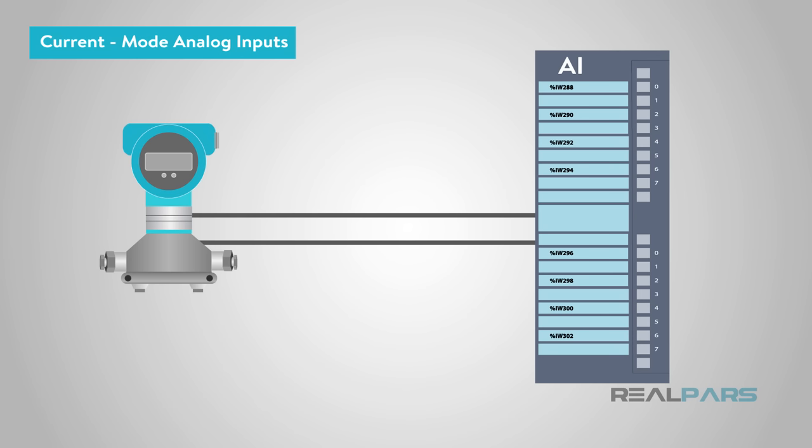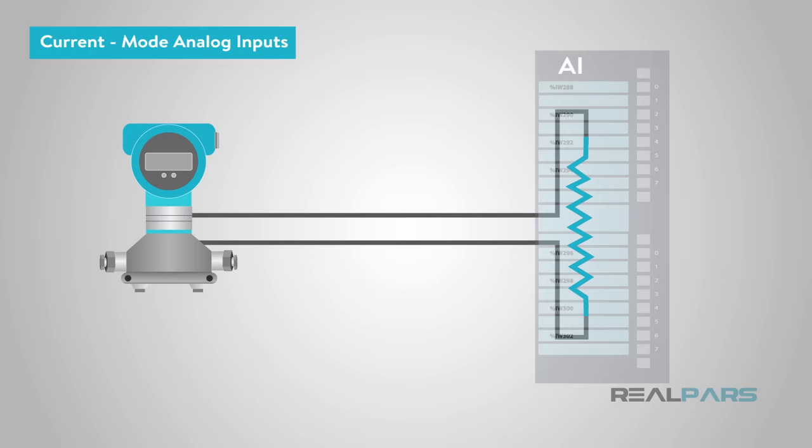From the PLC end, a current mode interface is generally a voltage mode interface with an added high-precision resistor. While the resistor is often inside the PLC module, and switched in by a jumper or connection position, it is effectively the same.